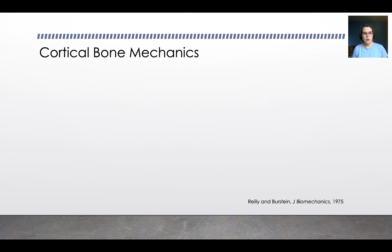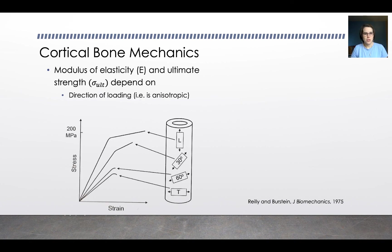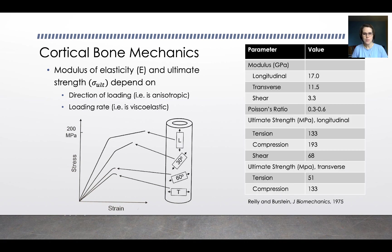For cortical bone, the modulus of elasticity and ultimate strength depend on the direction of loading, meaning it is an anisotropic material. Samples taken at different orientations — longitudinal, 30 degrees, 60 degrees, and transverse — show substantially different stress-strain curves. Cortical bone is also viscoelastic: the faster you load it, the stiffer it gets. A mechanical properties table shows the modulus varies widely by orientation, as does Poisson's ratio and ultimate strength. Bone does better in compression than tension, and better in both than in shear.